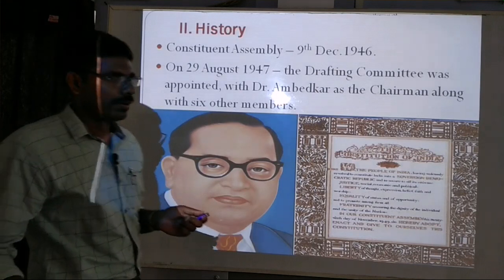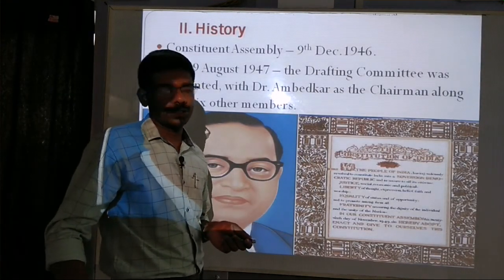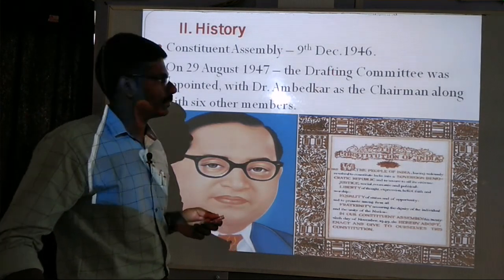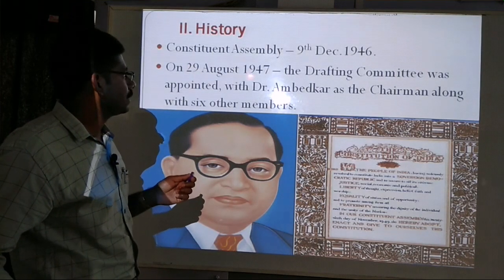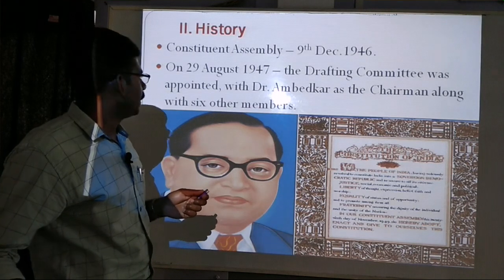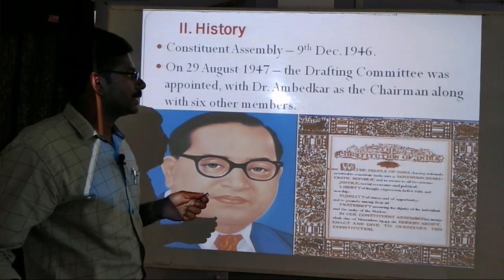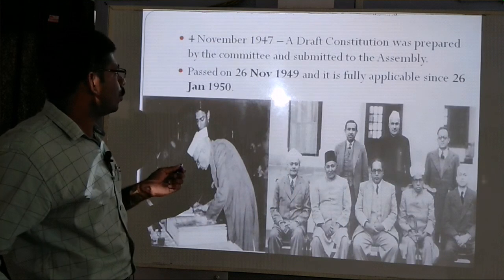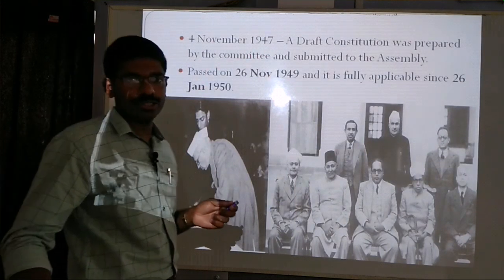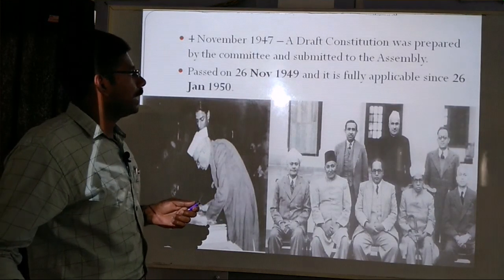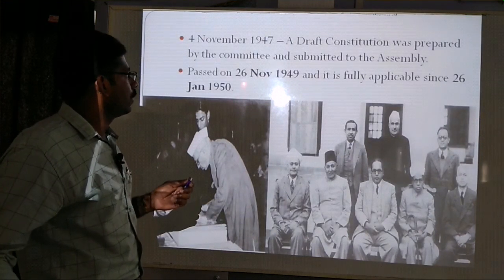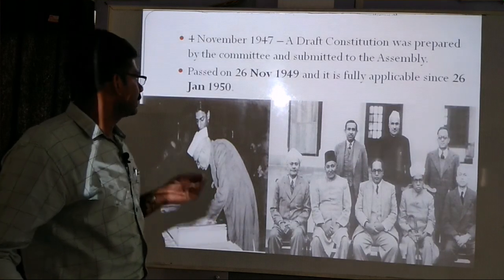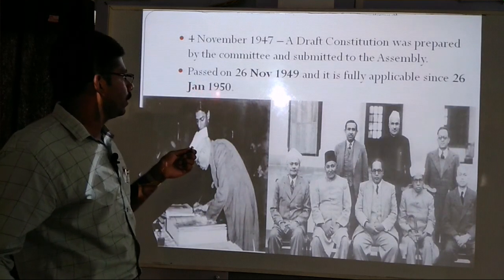Next, we want to discuss a small history of Indian constitution. The Constituent Assembly was set up on 9th December 1946. On 29th August 1947, the drafting committee was appointed with Dr. Ambedkar as chairman along with six other members. On 4th December 1947, a draft constitution was prepared by the committee and submitted to the assembly. It was passed on 26th November 1949 and fully came into effect on 26th January 1950.